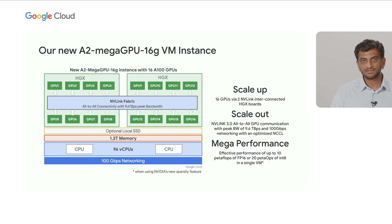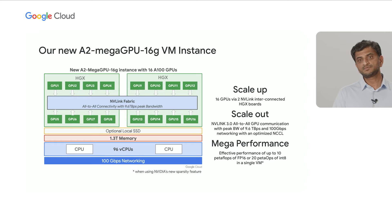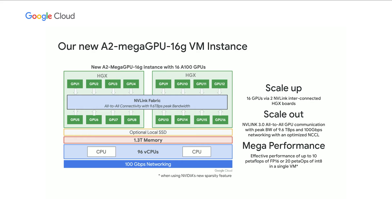An example of recent innovation for accelerator-optimized VMs is our A2 VMs. These were the first VMs to introduce the NVIDIA A100 GPU. I'm very proud that we have delivered the largest single-instance VM with up to 16 NVIDIA A100 GPUs among leading clouds, so that you can bring your machine learning training workloads, achieve the scale and performance you need, and grow with Google Cloud.